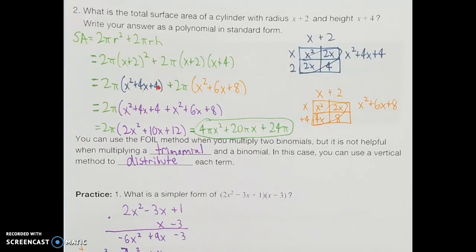Since I have 2π on the outside of parentheses for both terms, I can factor out 2π from the entire equation. Now I can take what's left and add them together: x squared plus 4x plus 4 from the first part, and x squared plus 6x plus 8 from the second product. Looking for like terms: x squared plus x squared makes 2x squared, 4x plus 6x is 10x, and 4 plus 8 gives 12. Since we still have that 2π in front, the last step is to distribute: 2π times the first term gives 4πx squared, times the second term gives 20πx, and 2π times 12 gives 24π.